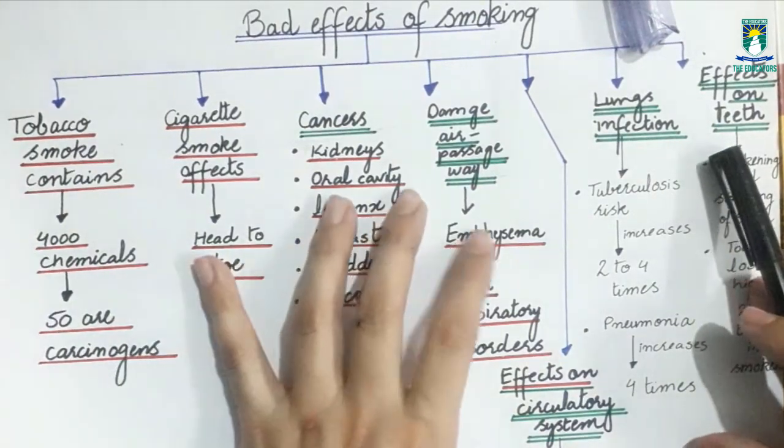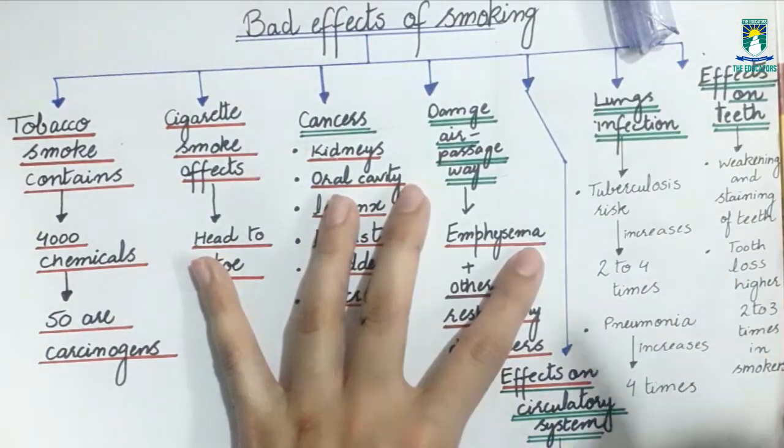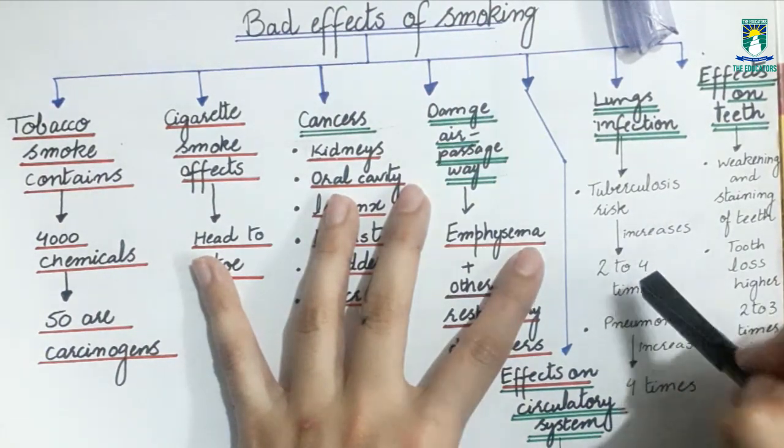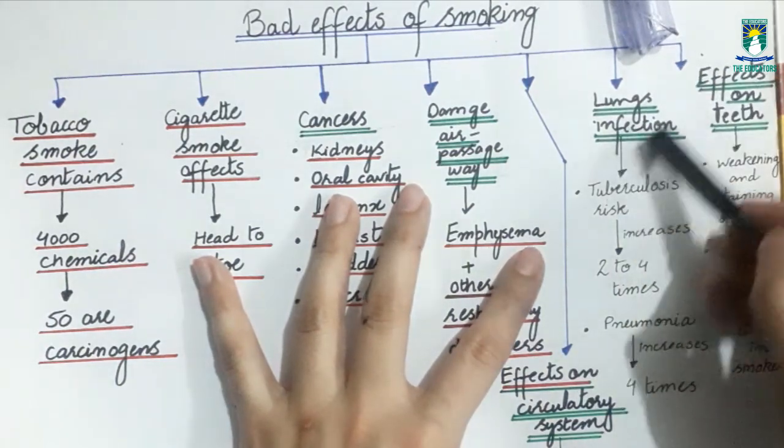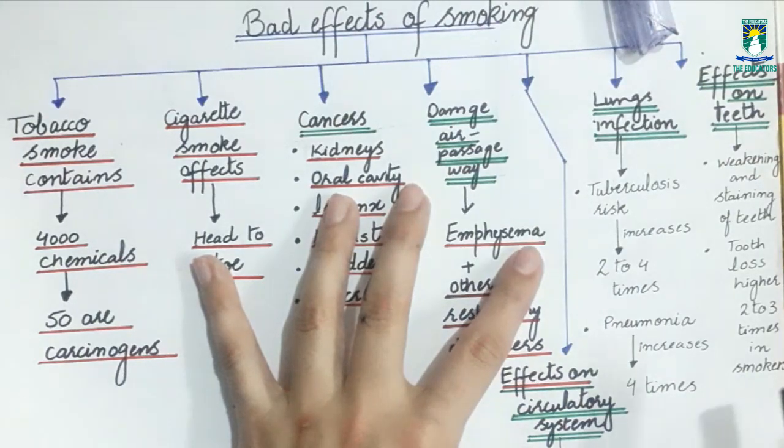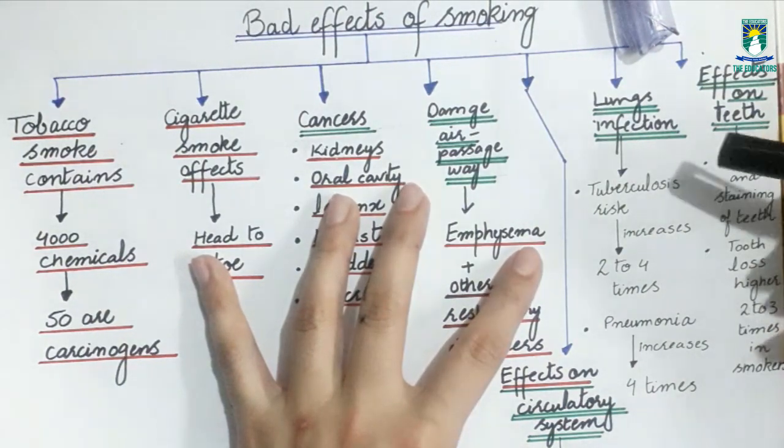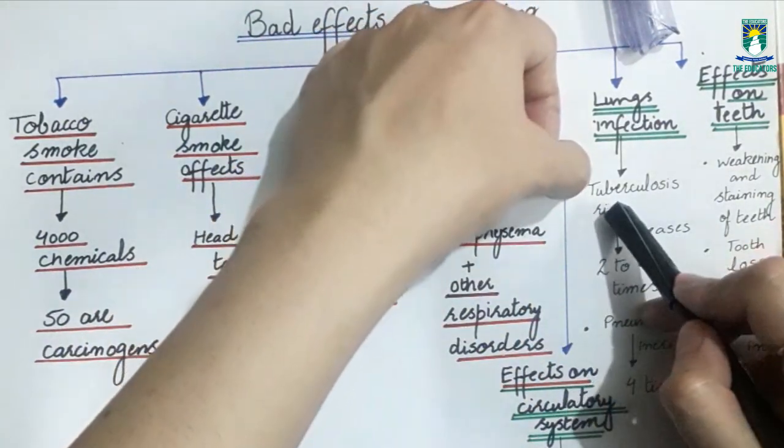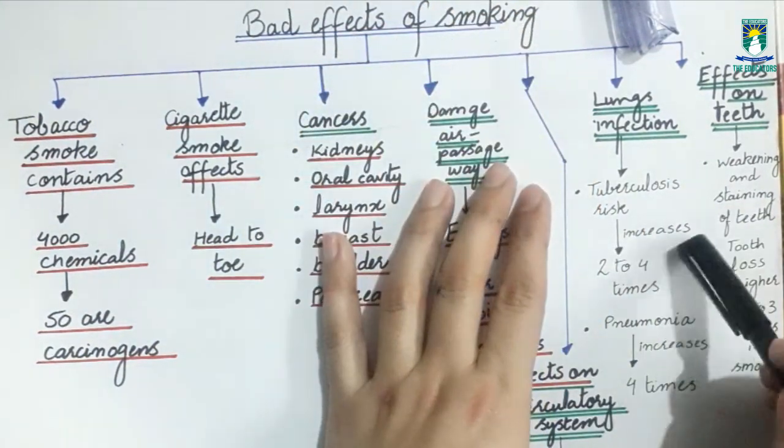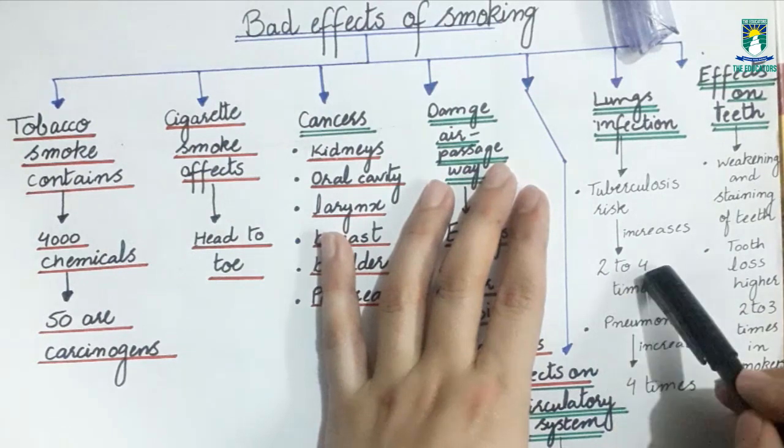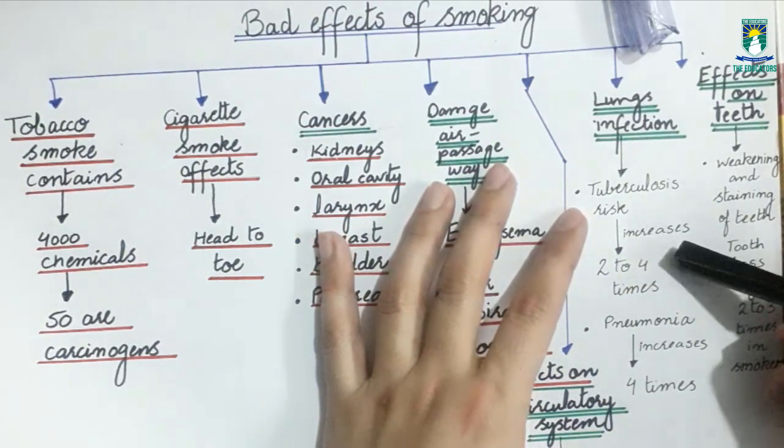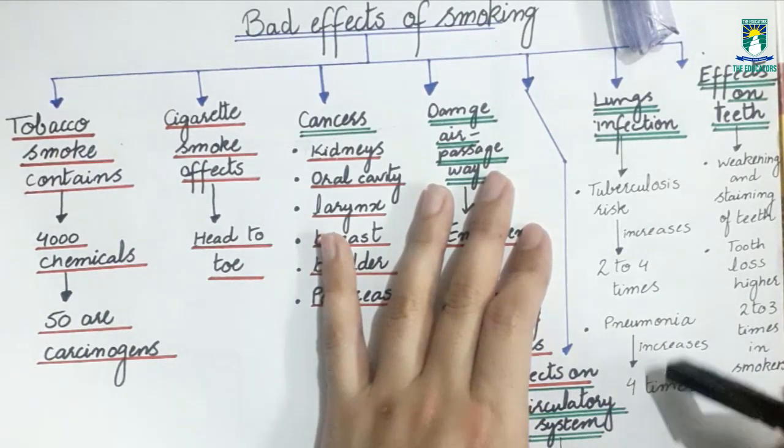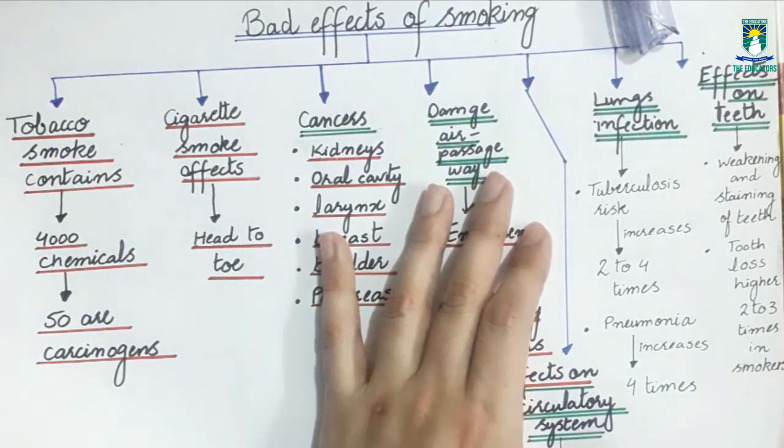Now we will discuss the effects of smoking on lungs. Smokers are at greater risk for developing infections particularly in the lungs. Lung infections are also due to smoking. For example, smoking increases the risk of tuberculosis in which you have coughing with blood. The risk increases two to four times higher in smokers compared to non-smokers. Similarly, pneumonia risk is also four times higher in smokers than non-smokers.